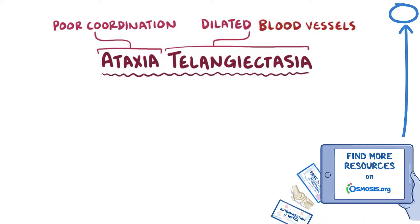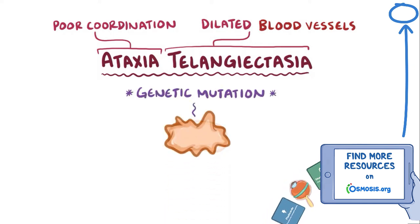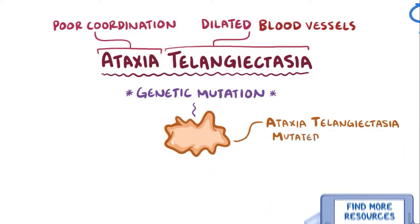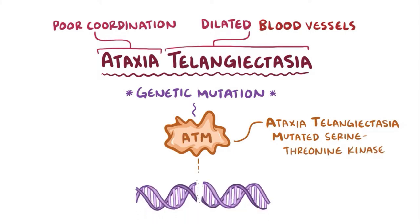Ataxia telangiectasia develops when a genetic mutation causes the lack of a protein called Ataxia telangiectasia mutated serine threonine kinase, or just ATM for short, which normally fixes up damaged DNA.